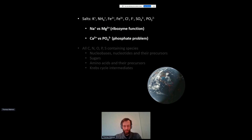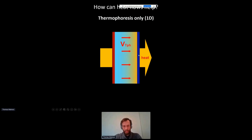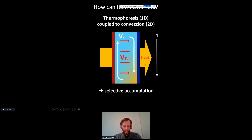How can heat flows help for those problems? Heat flows trigger two different things mostly. If we look in one dimension, we've got a cold side and a hot side — they're going to push molecules from the hot side towards the cold side. If we add gravitation to this picture, we'll get a convective roll in addition to that, and if we combine those two movements, we get a selective accumulation of species in the bottom cold corner.